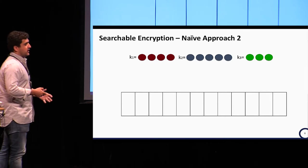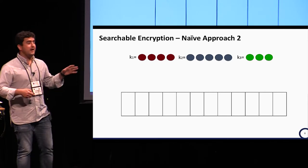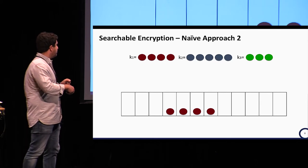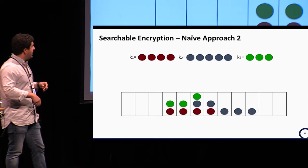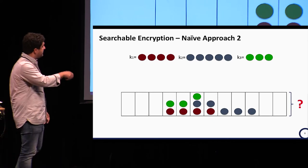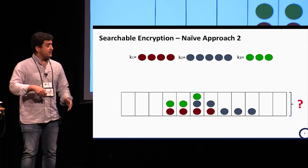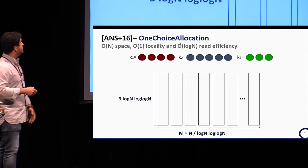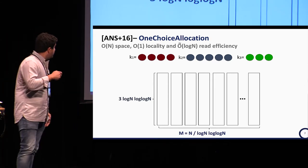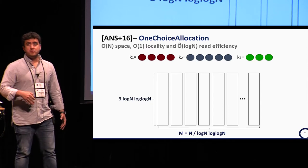A second approach is to replace the deterministic allocation algorithm and, for each keyword, decide where it starts in an array of super-buckets uniformly at random. We pick the starting point at random and place the keyword list there. By doing this, the keyword lists now have overlaps — in particular, there is a bucket where the blue, green, and red keywords overlap. This is promising for security. Using this intuition, one-choice allocation proves that setting the number of buckets to n over log n times log log n gives a worst-case bucket capacity of 3 times log log n, with overflows only with negligible probability.